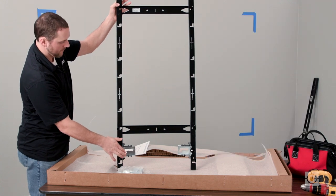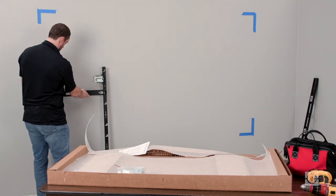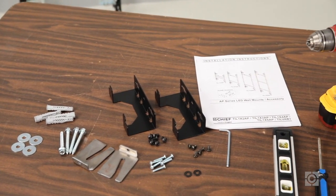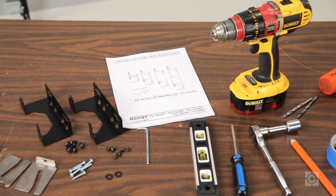The tiled series mounts arrive fully assembled and can hold up to five panels depending on the model. The mounts also come with all the mounting hardware for common substrates, and additional tools needed for the installation are shown.